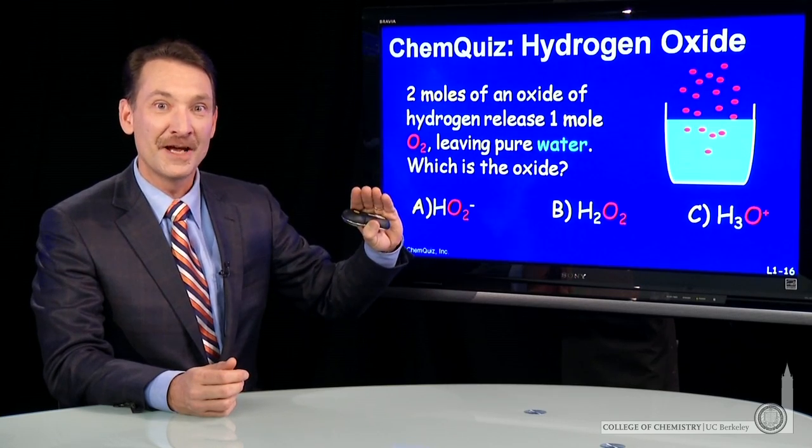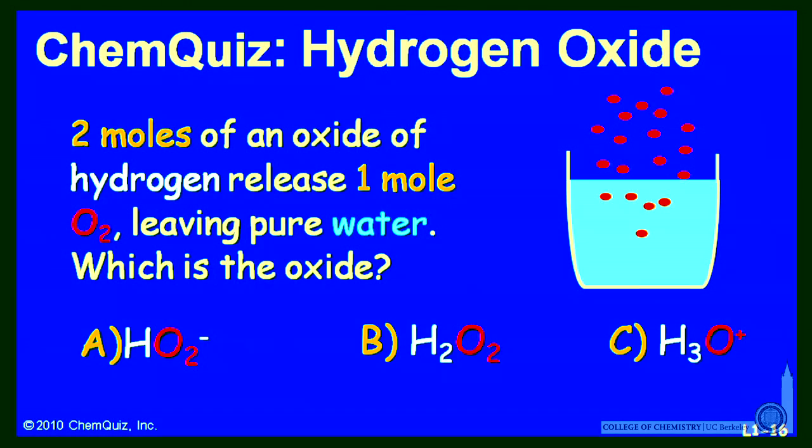Based on that information, can you tell me the formula of the hydrogen oxide? Is it A, B, or C? Think about that for a minute and make a selection.